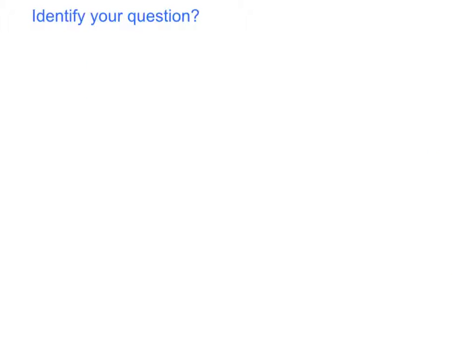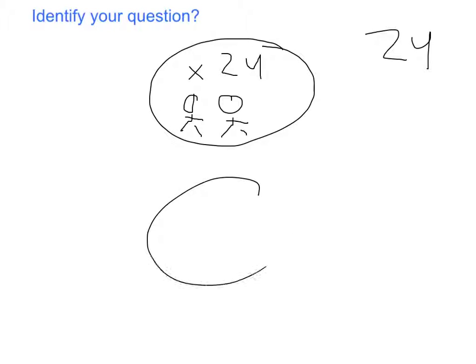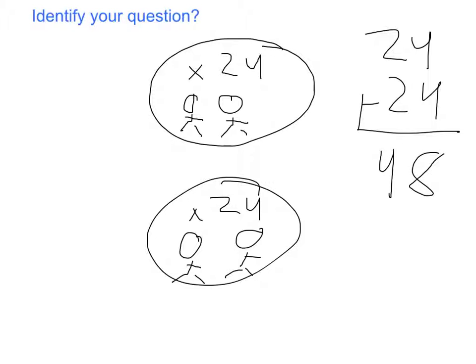Identify your question. In our question, it tells us that there are groups, which are families. In each family, they bought 24 couches. When one family has their 24 couches, we have a total of 24 couches given out. When another family gets their 24 couches, you can add 24 to this number and you'll see that we've given out a total of 48 couches. All together, these two families have 48 couches.